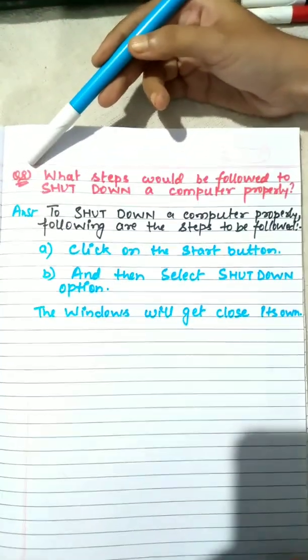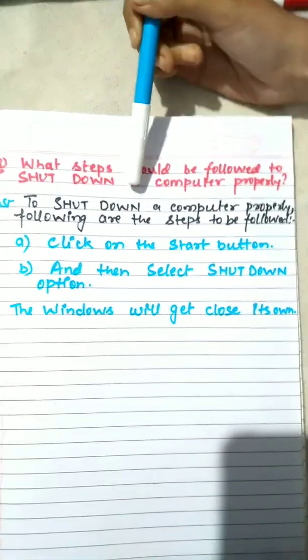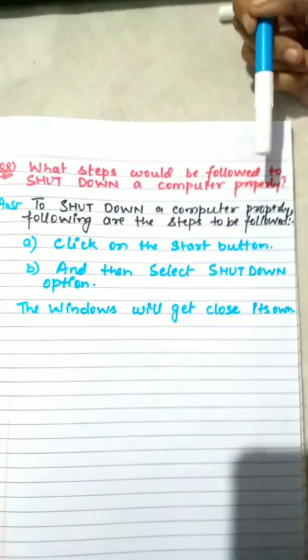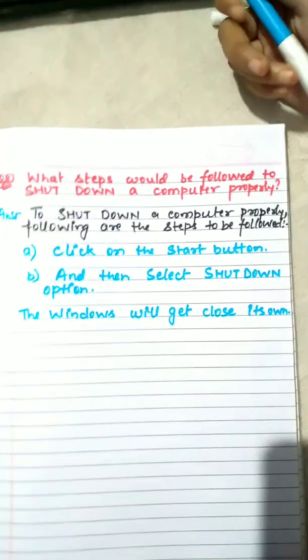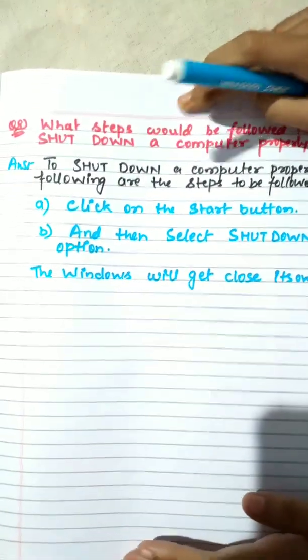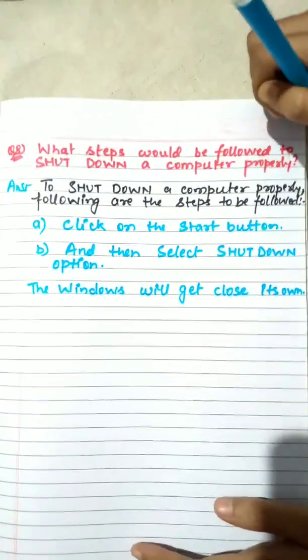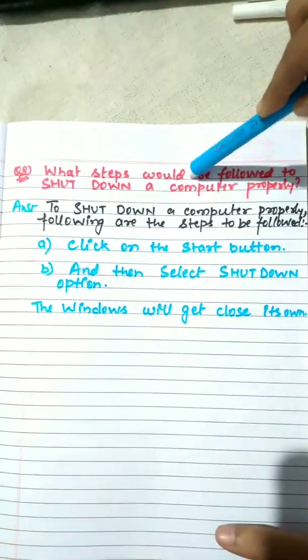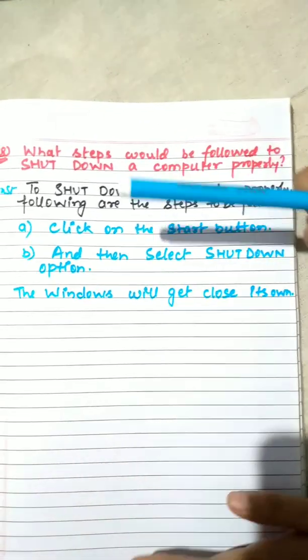Question number 8: What steps would be followed to shut down a computer properly? Here I have mentioned properly. Why? Because generally we just press the power button of the computer or laptop to shut down. That is not a proper way. That is totally wrong. You have to follow these steps to shut down your computer in a proper way.